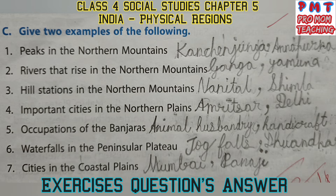Fifth, occupations of the Banjaras: animal husbandry and handicraft. Sixth, waterfalls in the peninsular plateau: Jog Falls and Dhuandhar Falls. Seventh, cities in the coastal plains: Mumbai and Panaji.